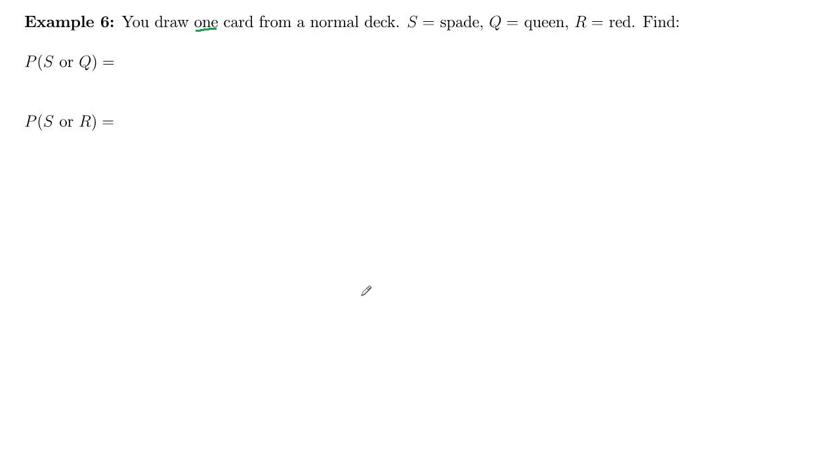So we need to use the regular addition rule here. This is going to be the probability the card is a spade plus the probability the card is a queen, and then we're going to subtract out the probability that it's a spade and a queen.